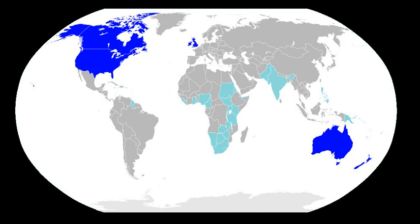English is a West Germanic language that was first spoken in early medieval England and is now a global lingua franca. Named after the Angles, one of the Germanic tribes that migrated to the area of Britain that would later take their name, England, both names ultimately deriving from the Anglia peninsula in the Baltic Sea.